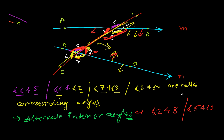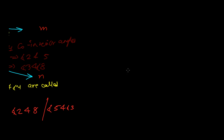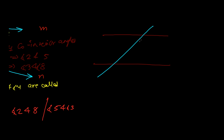The last type is called co-interior angles, or interior angles on the same side of the transversal. This is my transversal line — either this side or this side — and both angles should be internal angles. So angle 2 and angle 5 are co-interior angles. Similarly, angle 3 and angle 8 are co-interior angles. Together they are on one side of the transversal and both are formed inside the two lines. So these are co-interior angles.